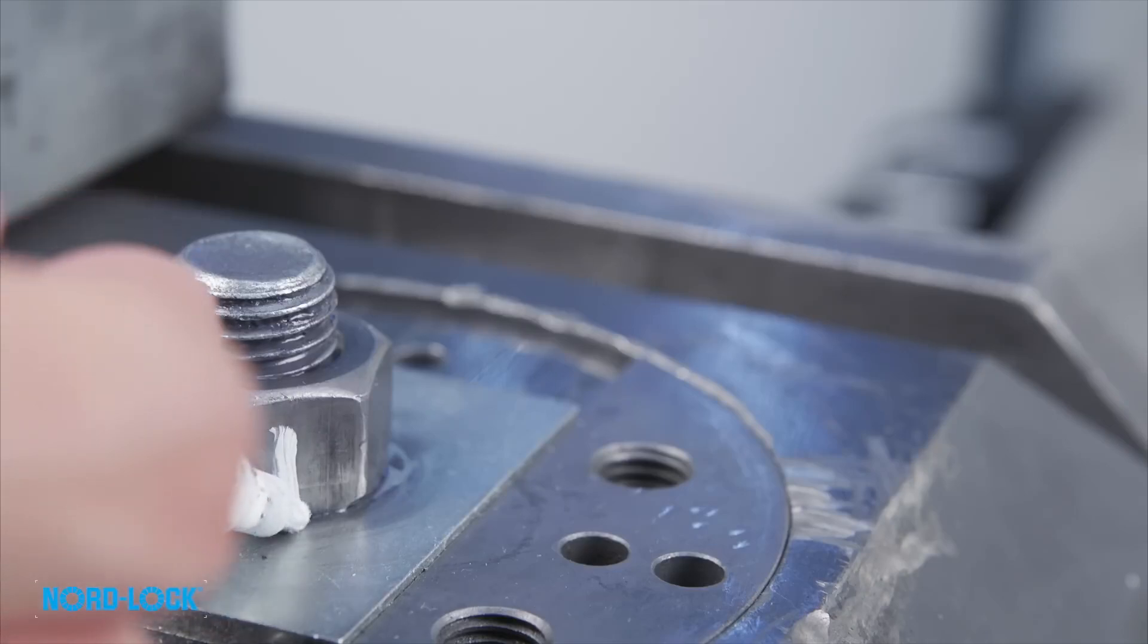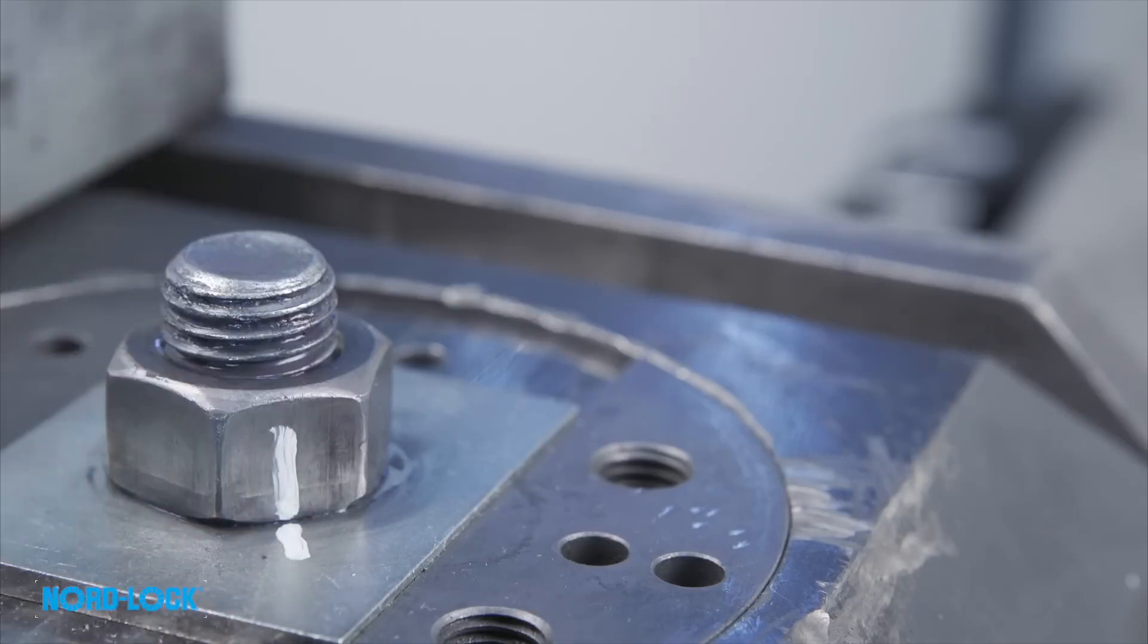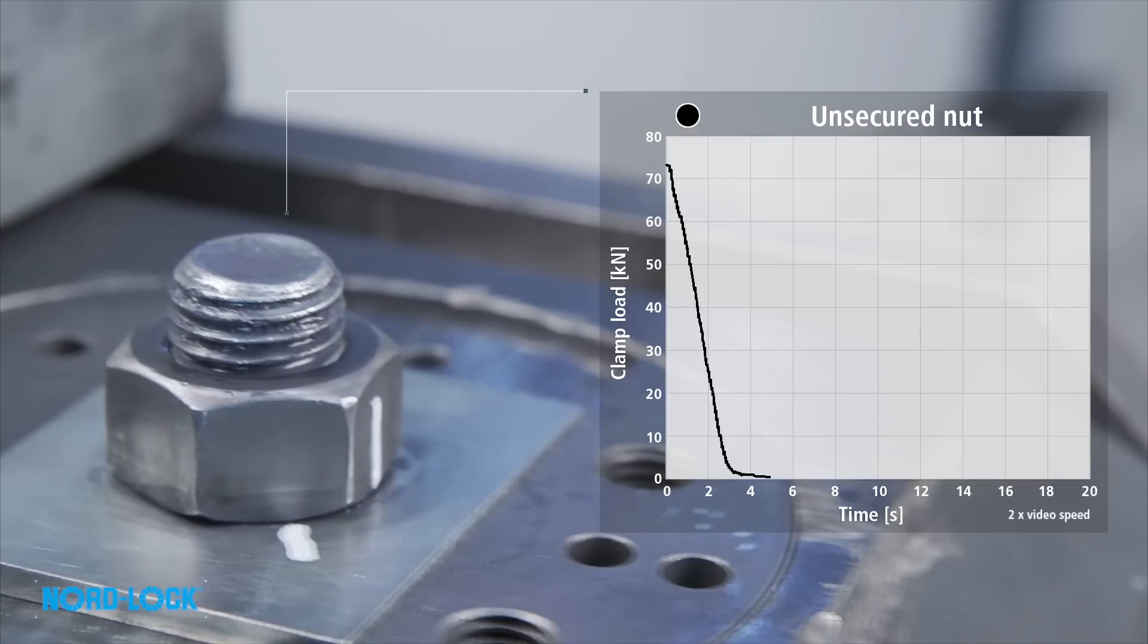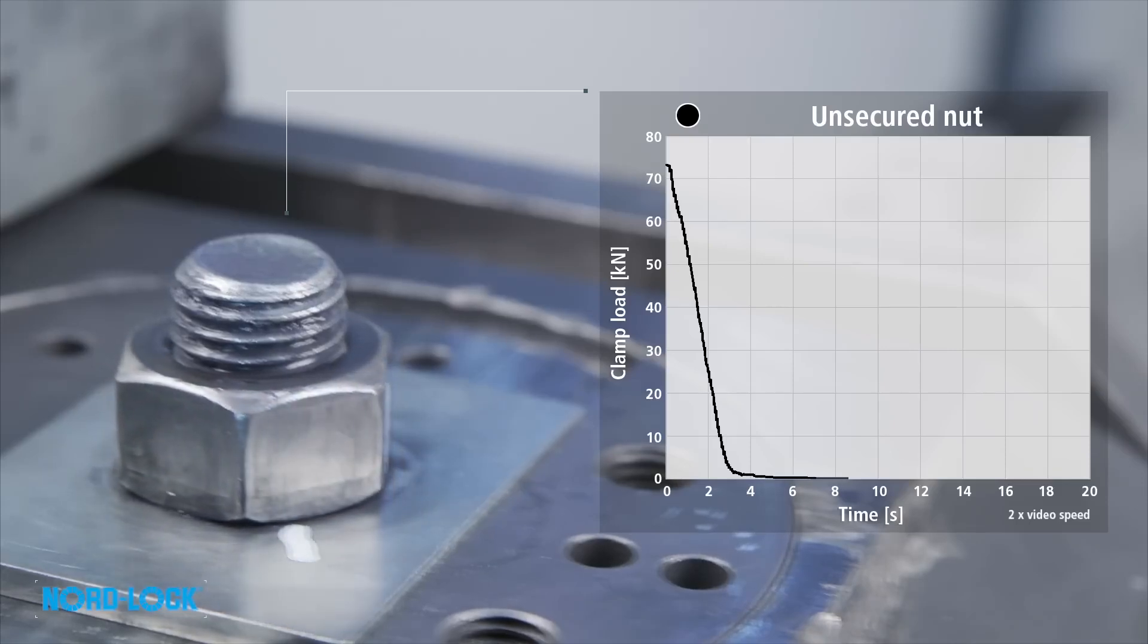We mark it to easily detect any rotation, and then run a test for 20 seconds. The nut starts to loosen, and the graph shows clearly how the tension drops dramatically within seconds when running the test.